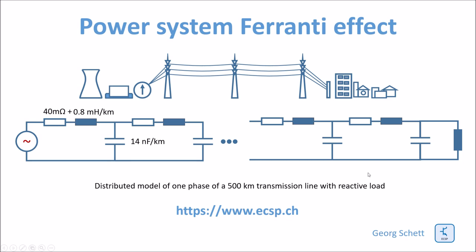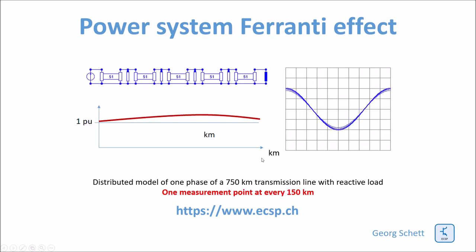Let's now look at what happens if instead of a resistance I put a reactor at the end of the line. With a reactor at the end of the same line, the voltage at the end decreases. If the reactor is optimized, the voltage is reduced to one per unit — meaning the same voltage at the source as at the end. However, with a reactive load you can see that the voltage profile along the line is not flat at one per unit; it goes a little above, giving a kind of N-shaped voltage profile.